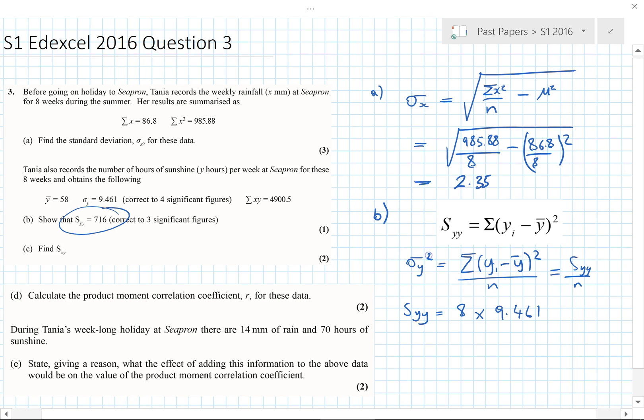My apologies, it's a rookie error. Obviously it's a variance, not standard deviation. It would be a square root if it was a standard deviation. So we need to say that SYY is equal to the variance, which is that number squared times by 8. So that's 8 times by 9.461 squared, which is 716. Okay, so that's that bit done.